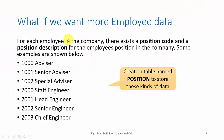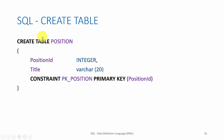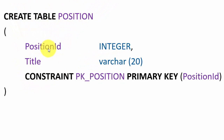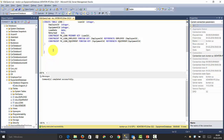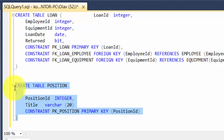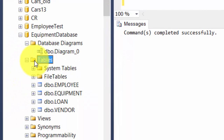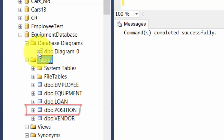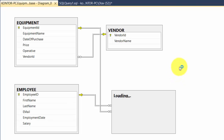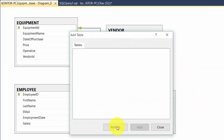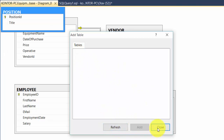We also want information about employees' positions in the company — position codes and a description for each. So we create a position table with CREATE TABLE, name it position, define two columns (position ID and title), and specify position ID as the primary key. Running the query in SQL Server, refreshing Object Explorer, and adding the table to the diagram, we can then move it closer to the employee table.